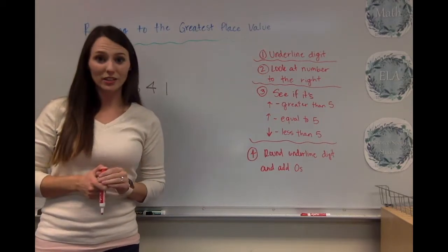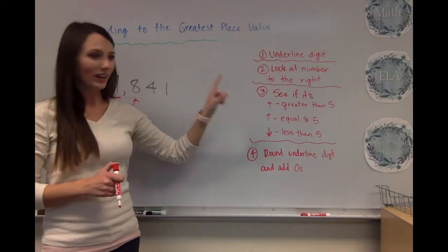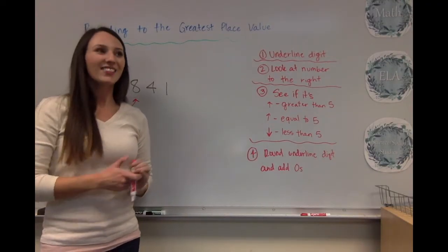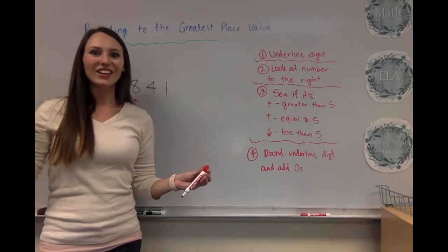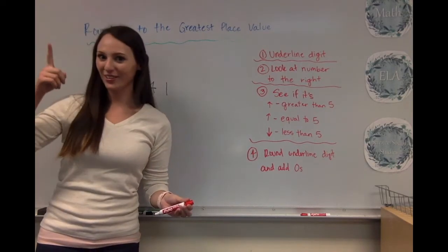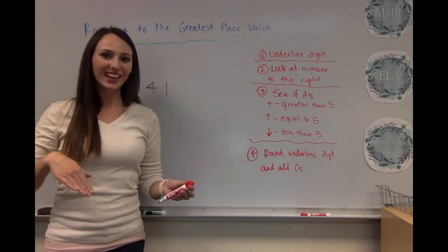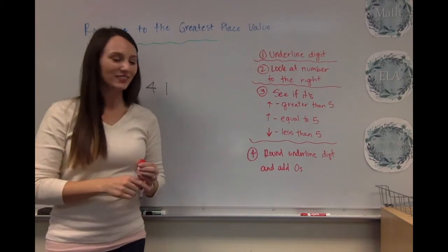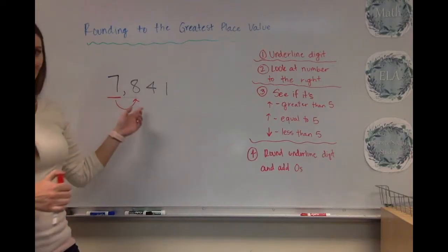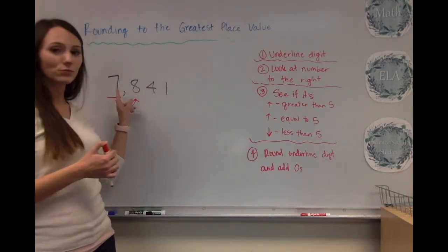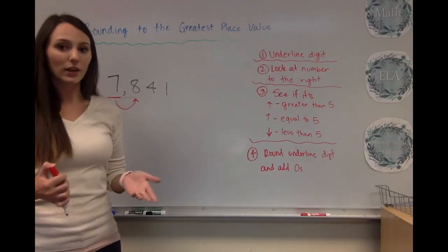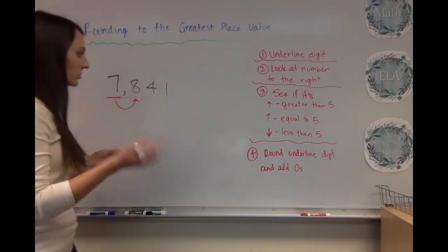it says see if it's greater than 5, equals to 5, or less than 5. And one of my students taught me this year, it's like the greatest thing ever. If it's 5 or more, let it soar or round up. If it's 4 or less, let it rest or round it down. So we see 8, that's obviously greater than 5. So we're going to round this number in our greatest place value. We're going to round that up. So we'll just round it up by 1,